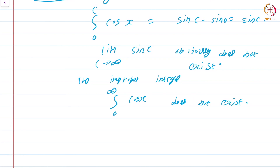We cannot assign a sensible meaning to the integral from 0 to ∞ of cos x. This is expected from the graph — if you think about the graph of cos x, it is clear that one cannot expect this function to be integrable in any meaningful sense.